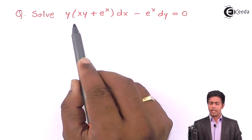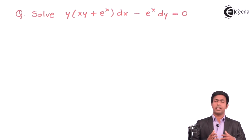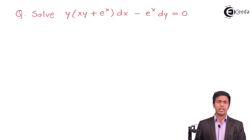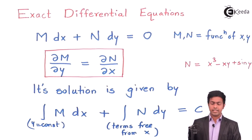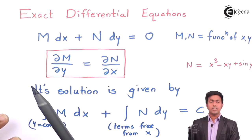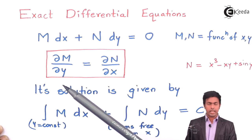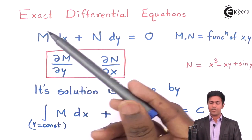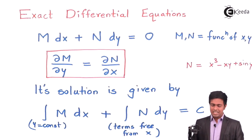Here you can see the given equation is in the form M dx + N dy = 0. We have seen the exact differential equation where the equation is in this form. According to the exact DE definition, if the equation is in the form M dx + N dy = 0 and if ∂M/∂y equals ∂N/∂x, then we say the equation is exact and we use the corresponding formula to get the solution.